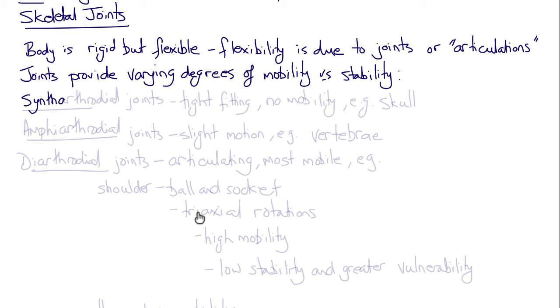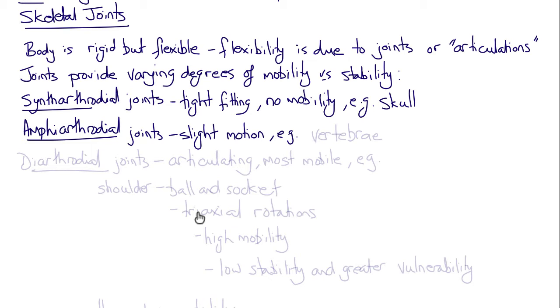There are synth-arthrodial joints that are tight-fitting and have no mobility, such as the joints between the bones and the skull. Then there are amphi-arthrodial joints that provide slight motion, for example the vertebral joints, because they're constrained by intervening cartilaginous and ligamentous tissue.